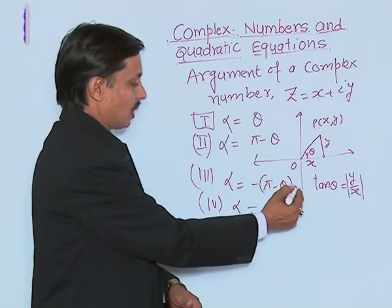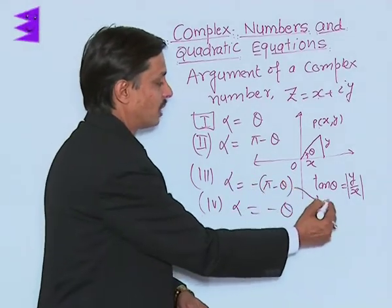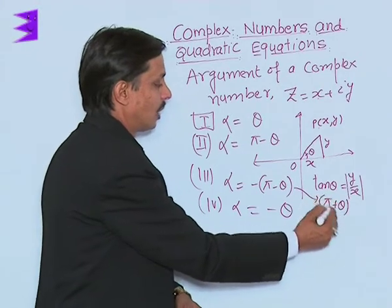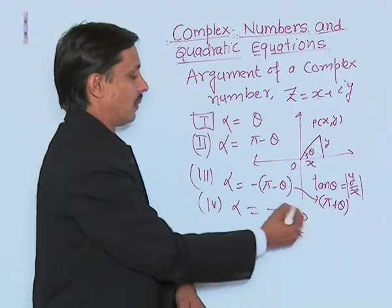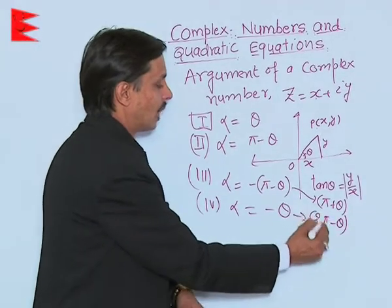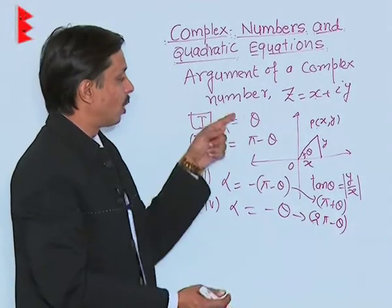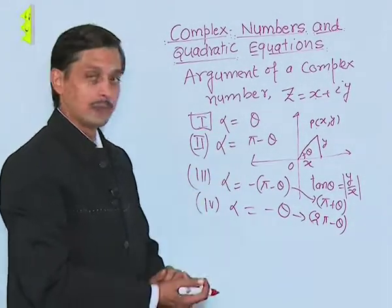Sometimes in the second quadrant we may express it as pi plus theta, or as 2 pi minus theta in the fourth quadrant. But for the principal branch, we always consider the standard values as described.